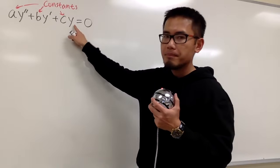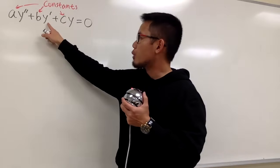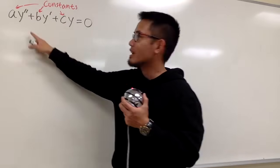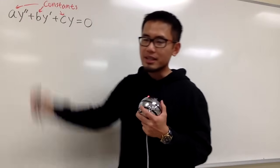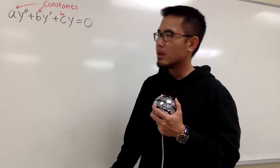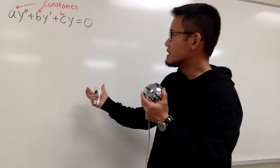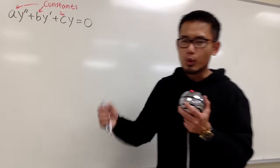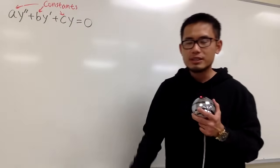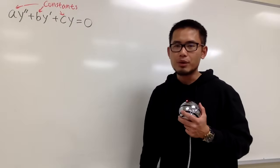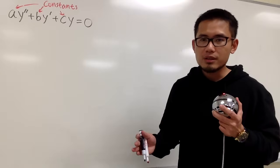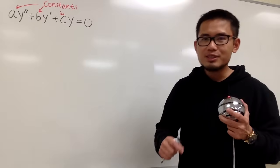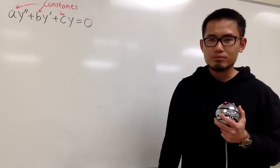As we can see, we have y, y' which is the first derivative, and y'' the second derivative. These are just constant multiples of the original, first, and second derivatives. Do we know a function so that its derivative is just a constant multiple of the original?